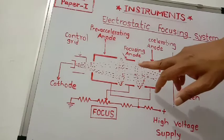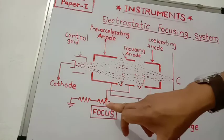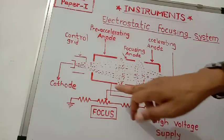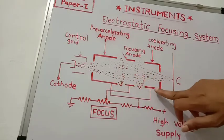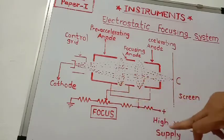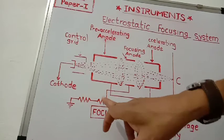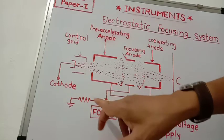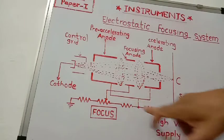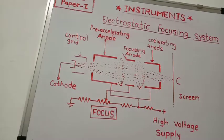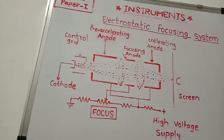The focusing anode is at a lower potential than the pre-accelerating anode and accelerating anode. These two anodes are connected to a high positive potential, and the focusing anode has a lower potential than these two anodes.